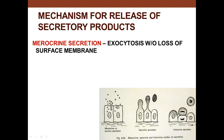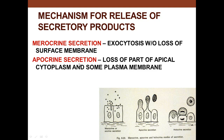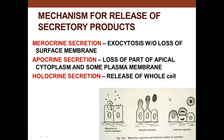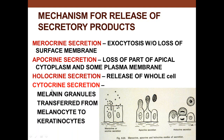The mode of secretion of the submandibular gland is merocrine secretion — exocytosis without loss of cellular components. A vesicle fuses with the plasma membrane and discharges its contents without loss of membrane. There's also apocrine secretion, where some of the cytoplasm is lost. And there's holocrine secretion, where the whole cell is lost — this is what the sebaceous gland does. Another type is cytocrine secretion, where one cell — the melanocyte — produces granules specifically for another cell — the keratinocyte.